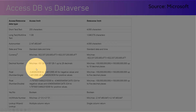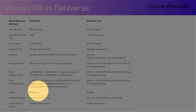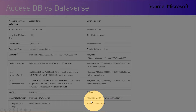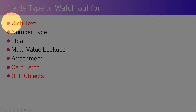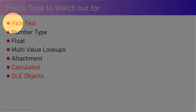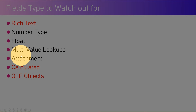That's why preparing your Access database is an important step. Float is also problematic. Boolean is okay. For lookups, Access returns multiple columns in the lookup whereas Dataverse supports only a single column, so that is not supported in migration. Fields not supported at all include rich text, calculated fields, and OLE objects — anything marked in red. Number type float, multi-value lookup, and attachments are supported but require careful handling during migration.